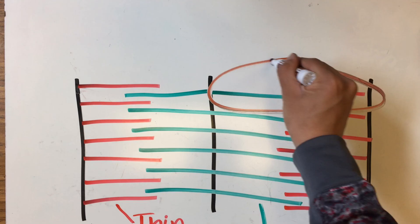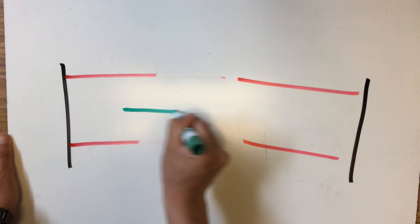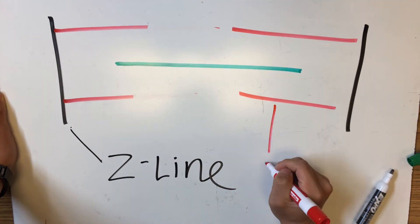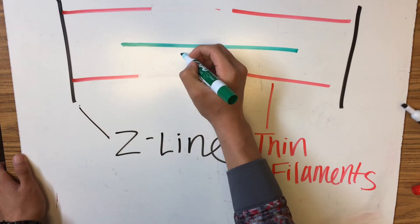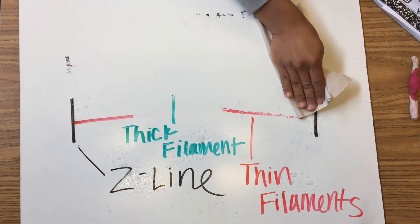Let's take a look at this particular part of the sarcomere. Again, here are the thick filaments and the thin filaments and the z line. What we are looking at here is a relaxed state of the sarcomere.